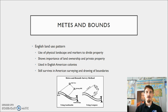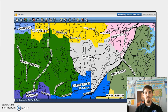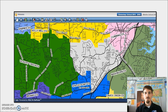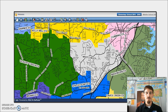We find the metes and bounds system in the early English American colonies — the 13 original colonies along the eastern seaboard — and some states today still use this system to subdivide land or create boundaries within their communities. For example, I went into the GIS system for Forsyth County where I live and pulled up a map showing the elementary school districts. Within those districts, you can see various elements used to draw boundaries, primarily neighborhoods and roads incorporated into the boundary lines.